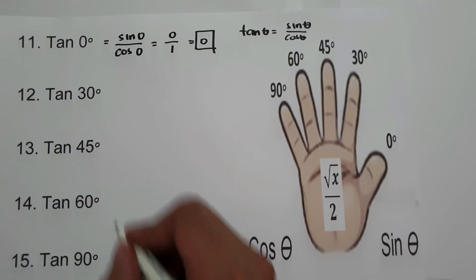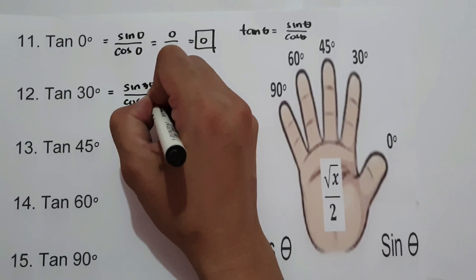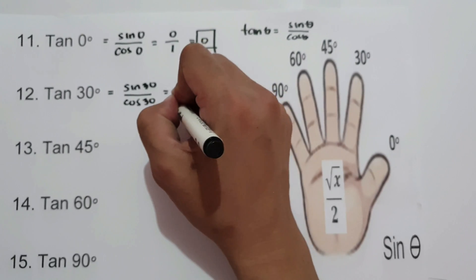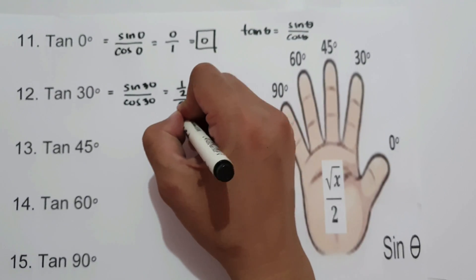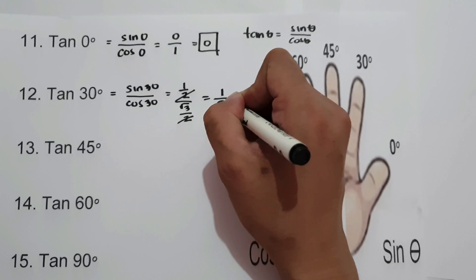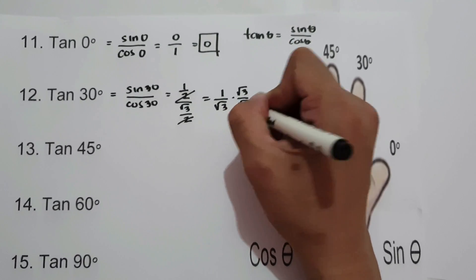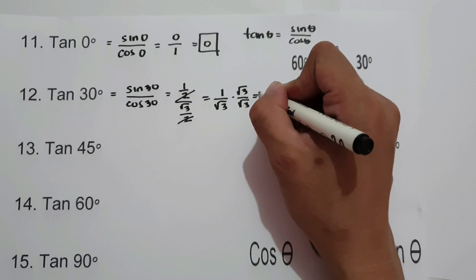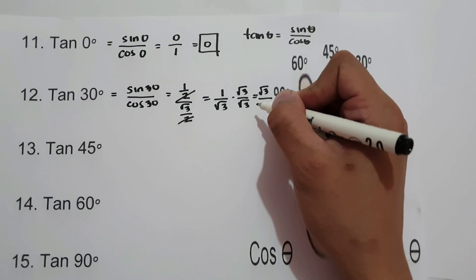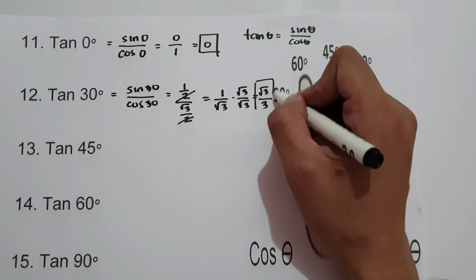For tangent 30°, that is sine 30° over cosine 30°. Sine 30° is 1/2, divided by cosine 30° which is square root of 3 over 2. Simplifying gives 1 over square root of 3. Rationalizing by multiplying numerator and denominator by square root of 3: we get square root of 3 over square root of 9, and square root of 9 is 3. Tangent 30° is square root of 3 over 3.